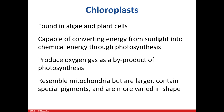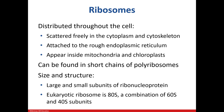Chloroplasts, which are found in plants and algae, take the energy from sunlight and produce chemical energy in the form of carbohydrates. In this process, oxygen is given off as a byproduct. Ribosomes can be found in various forms — they can be free, attached to the ER, or within the mitochondria and chloroplasts. Their function is to synthesize proteins.